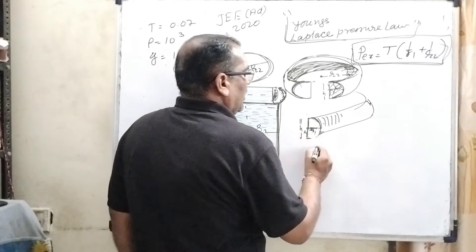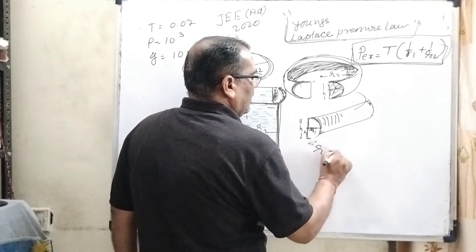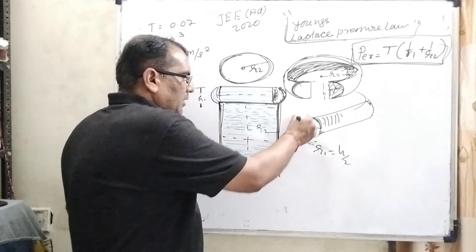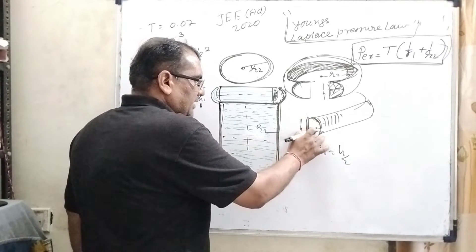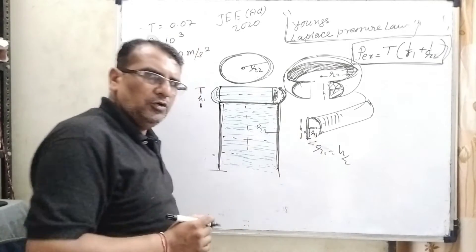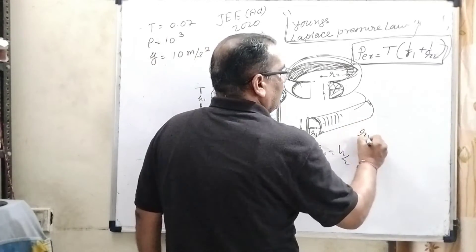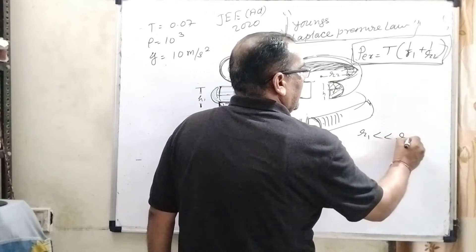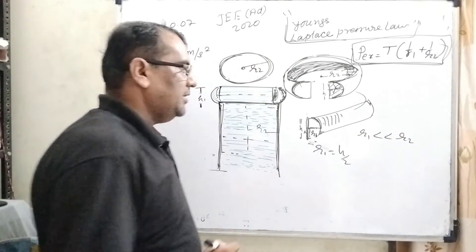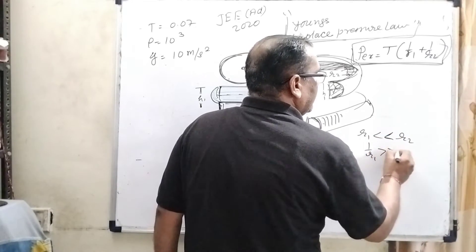So here, r1 is equal to h/2. Total height is h and exactly middle part you can consider that is r1, so r1 equals h/2. So here r1 is less than r2, then what is the inverse relation? 1/r1 is greater than 1/r2.